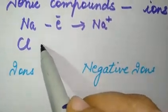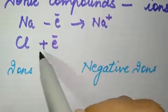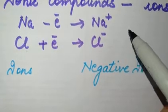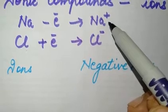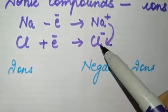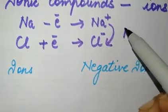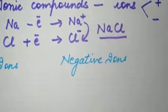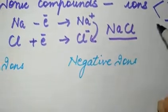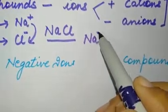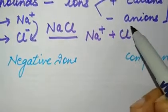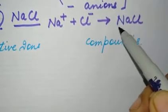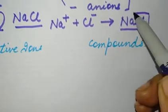So chlorine gains one electron and when it gains one electron it becomes negatively charged. Sodium has one extra electron which it gives to chlorine, and chlorine gains that electron. They form a compound known as NaCl — your common salt. The net charge will be zero: plus one and minus one, making NaCl an ionic compound.